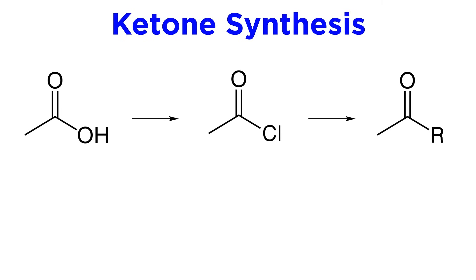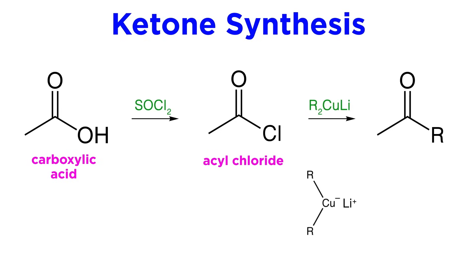Ketones can also be produced from carboxylic acids, often through multiple steps. For example, if a carboxylic acid is converted into an acyl chloride, then reaction with a lithium diorganocopper reagent can result in replacement of the chlorine atom with an alkyl group, thus producing a ketone.